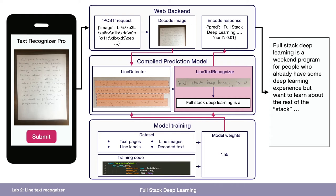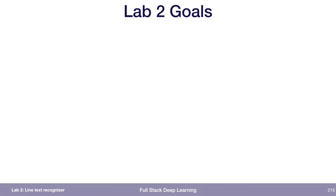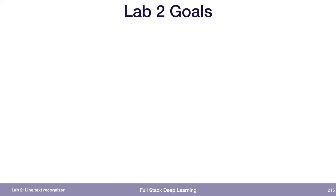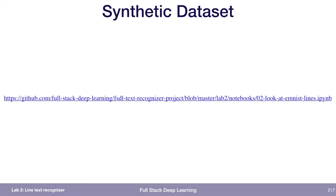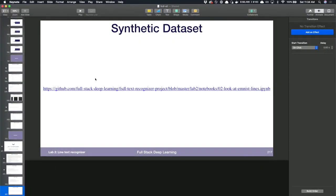Thinking about the network architecture we're trying to create — this lab is situated in the line text recognizer module. Starting with a synthetic dataset: if you go into the repo, go into lab two and then notebooks, there's a notebook that says 'let's look at EMNIST lines.' I'm going to open that up.